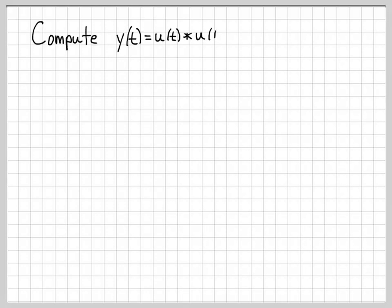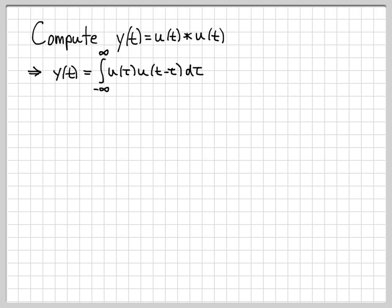In this example, we are going to compute the convolution of two unit step functions. Let y of t equal u of t convolved with u of t, where u of t is the unit step function. The convolution symbol is just shorthand for the convolution integral, which we can write as the integral from minus infinity to infinity of u of tau times u of t minus tau, d tau. This is the integral we need to evaluate to compute y of t — it is just the definition of the convolution integral.